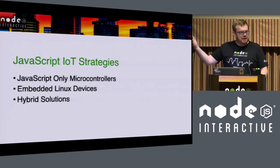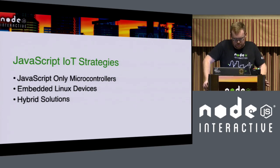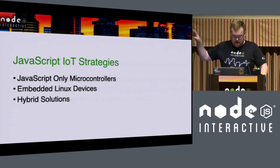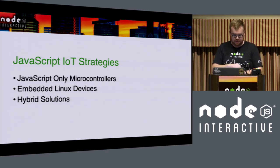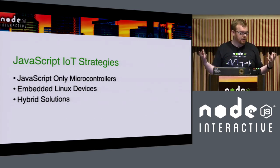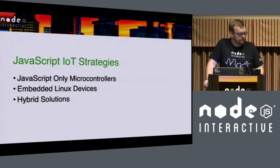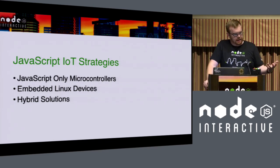There are three main strategies for Internet of Things and JavaScript. First, there's JavaScript microcontrollers, which actually run JavaScript on the device itself. They have a small runtime — nothing like V8 — so you're not going to get ES6 or all the performance optimizations you're used to. You're writing in ECMAScript 5.